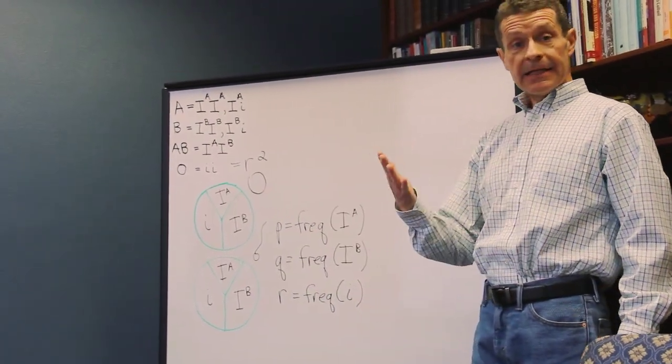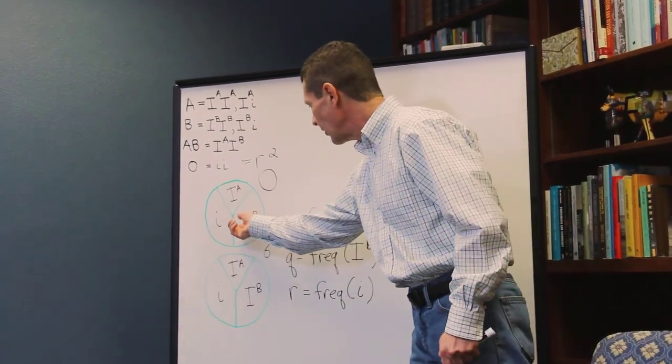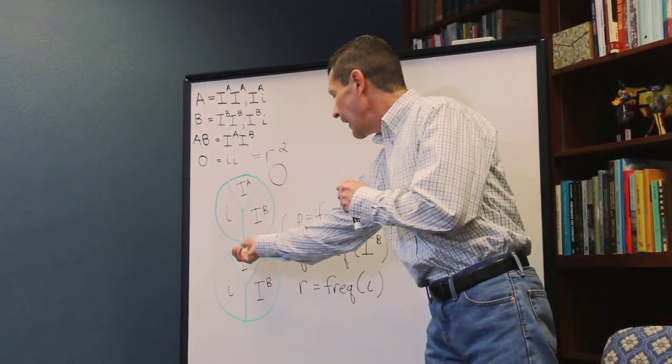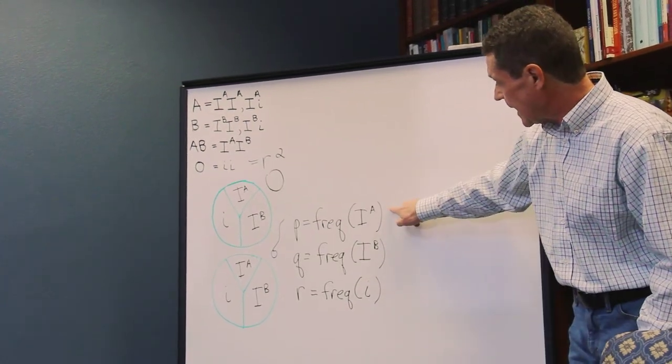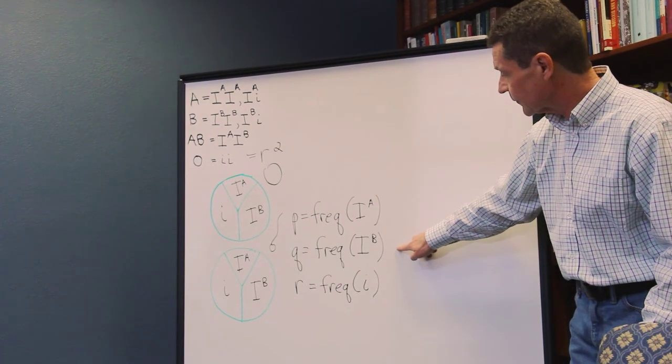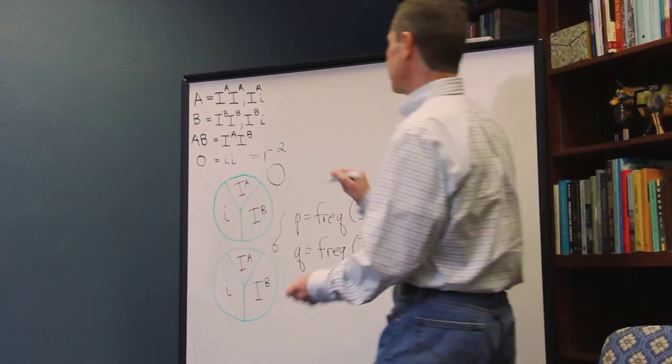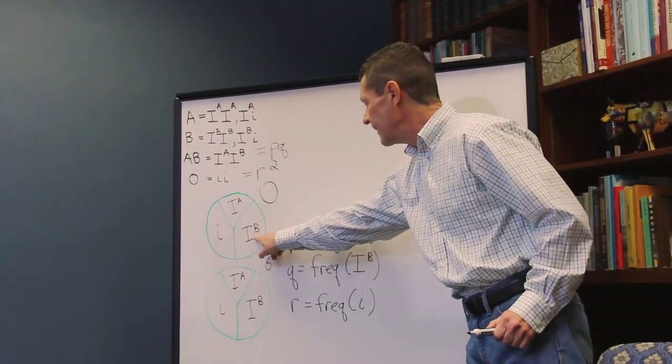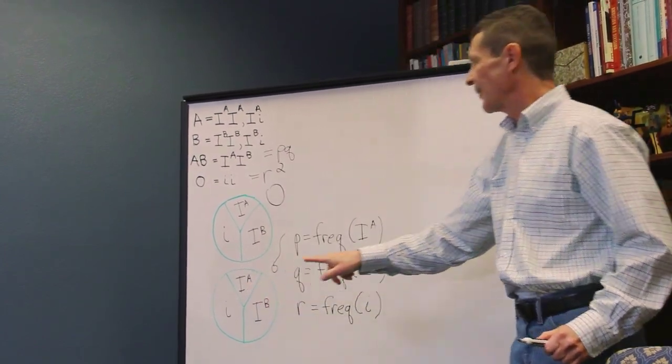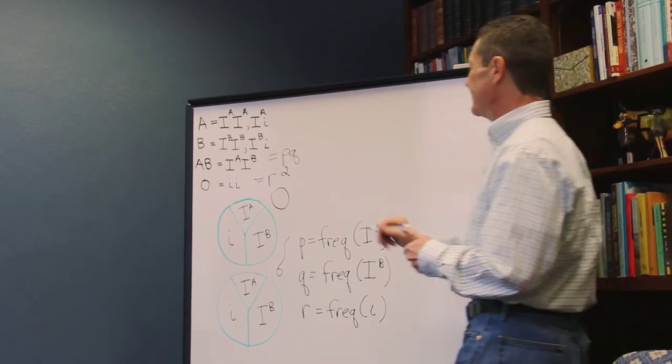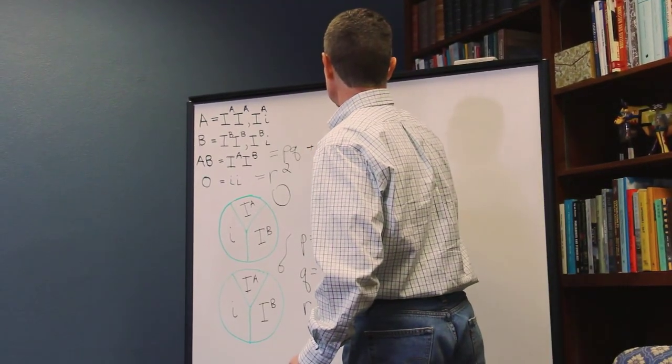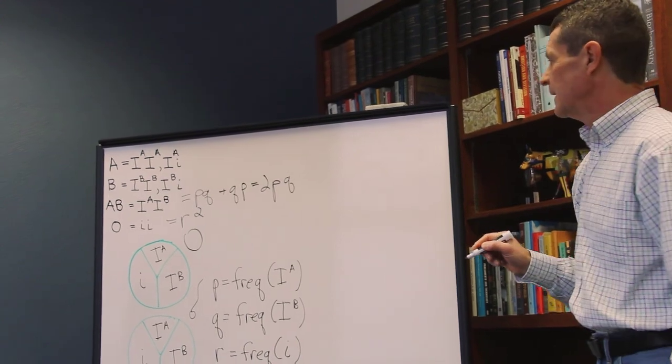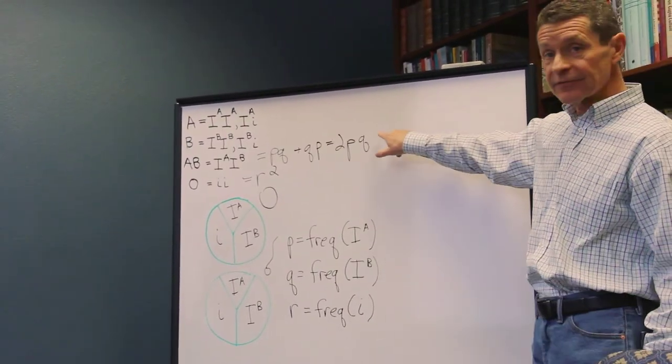What about AB? So to get an AB offspring, you have to pull, well, there's two ways to do it. I could pull an IB egg and an IA sperm. IA has frequency P. IB has frequency Q. So that combination is PQ. But I can get it another way. I can take an IB egg and an IA sperm. That's QP. Or the same as PQ. So that is 2PQ. So that looks familiar at least from the Hardy-Weinberg.